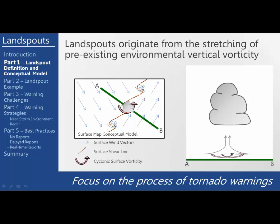When this happens, the cyclonic vorticity that originated along the boundary gets stretched upwards. The angular momentum is conserved so the vorticity tightens and spins faster. If this process continues unabated, a condensation funnel can form at the base of the cloud and persist with the cyclonic surface vorticity. When this happens, it is called a landspout tornado.